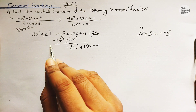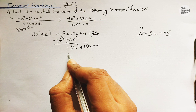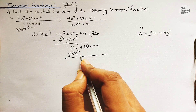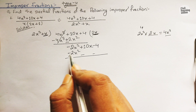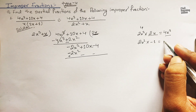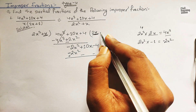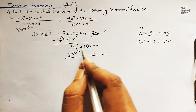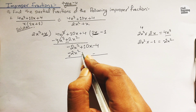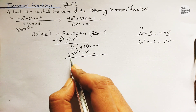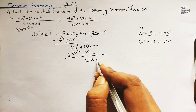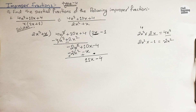In the next step, we need to cancel out the 2x² term. Multiplying 2x² by −1 gives −2x², and x multiplied by −1 gives −x. After changing the sign and cancelling, we have 10x + x = 11x, and −4 remains. So the remainder at this stage is 11x − 4.